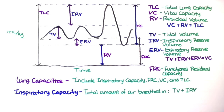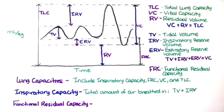Going back to the functional residual capacity — this cannot be measured directly with spirometry because the residual volume, or RV, cannot be exhaled. The functional residual capacity is therefore measured indirectly using helium dilution or nitrogen washout.